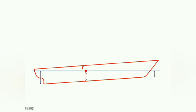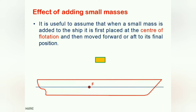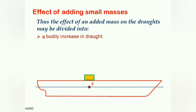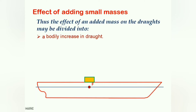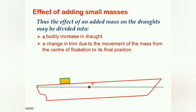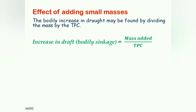The moment we add any mass to a ship, we will assume that the mass is first placed on the center of floatation and then shifted to its final designated position. Such problems will be dealt in two steps: first, calculating the change in mean draft because of the addition of the mass on the center of floatation; and second, the change in trim because of its shifting to its final designated position. Increase in draft can simply be determined by dividing mass by the TPC.